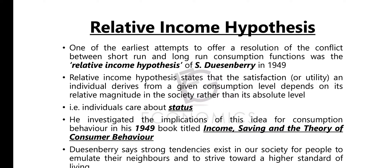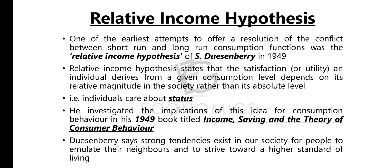One of the earliest attempts to offer a resolution to the conflict between the short-run and long-run consumption function was the Relative Income Hypothesis of Duesenberry in 1949. The Relative Income Hypothesis states that the satisfaction or utility an individual derives from a given consumption level depends on its relative magnitude in the society rather than its absolute level.